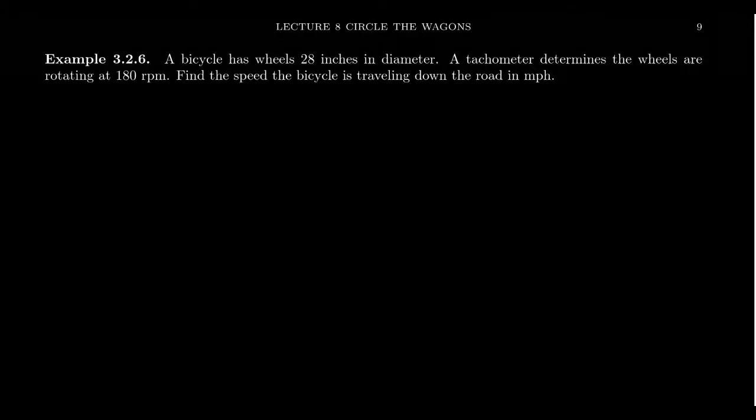So consider a bicycle whose wheels are 28 inches in diameter. If a tachometer determines the wheels are rotating at 180 RPMs, RPM here represents revolutions per minute, let's find the speed that the bike is traveling down the road in miles per hour. All right. So what is being asked in this story problem here?